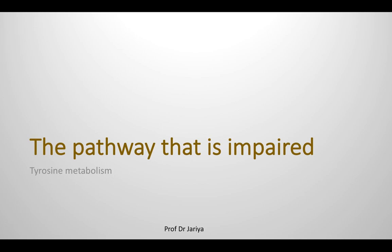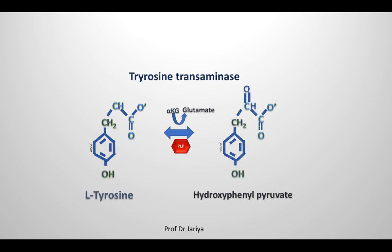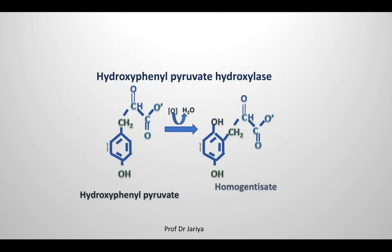The pathway of tyrosine metabolism is impaired, which is as follows: in the presence of transaminase, tyrosine is converted to hydroxyphenylpyruvate. Its amino group is transferred to alpha-ketoglutarate, which is converted to glutamate. Hydroxyphenylpyruvate, in the presence of hydroxylase, is converted to homogentisate.